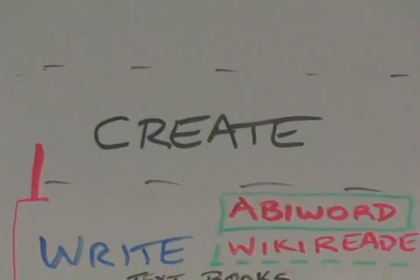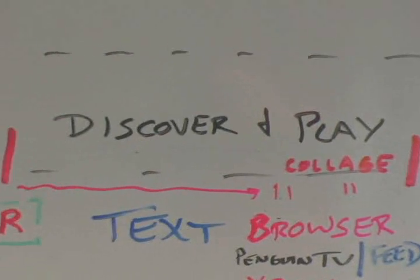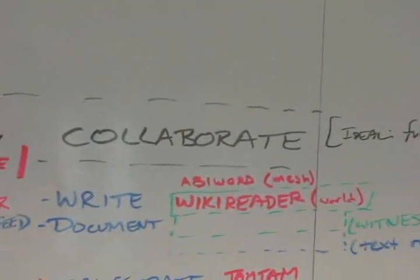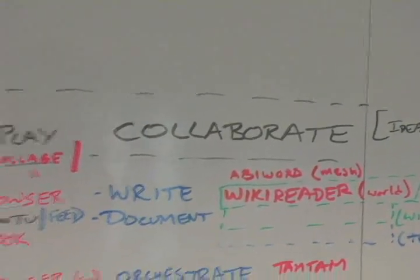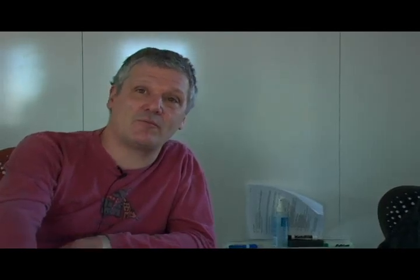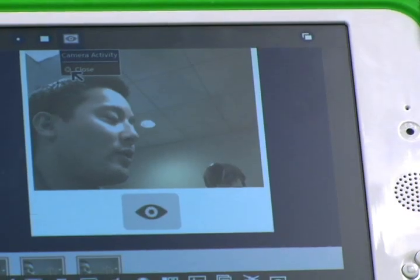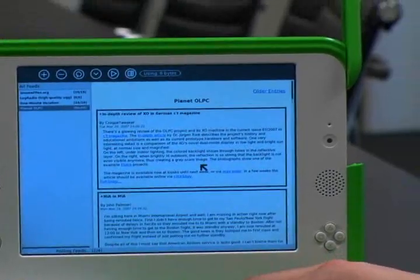There are two sets of tools that we have on the laptop. One set of tools are tools for exploring — so we've got a web browser, email, chat, and things like that. And then there are tools for expressing — so we've got the camera, word processing, musical composition tools, and things like that.